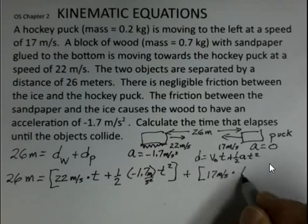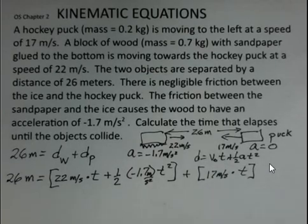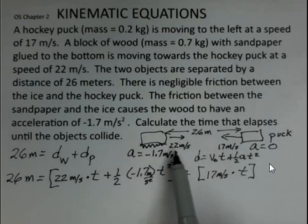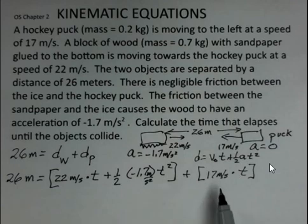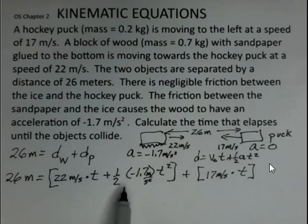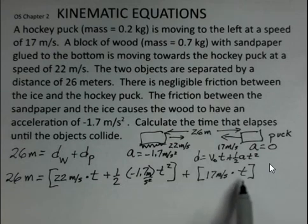Now what about the hockey puck? Well it has a little easier calculation, there's no acceleration. The distance it travels is equal to 17 meters per second multiplied by the time until the collision. Now even though these are opposite directions, I'm not using these in the sense of velocity here.